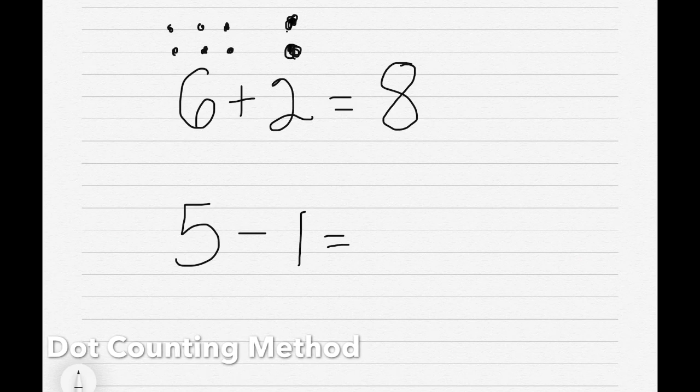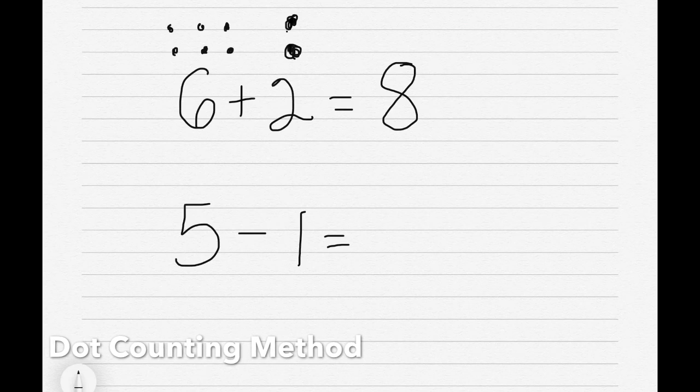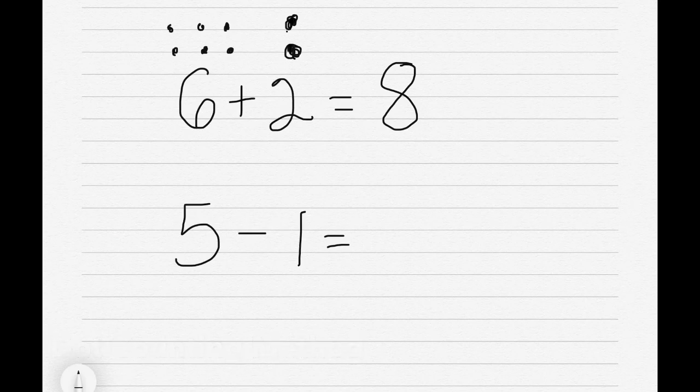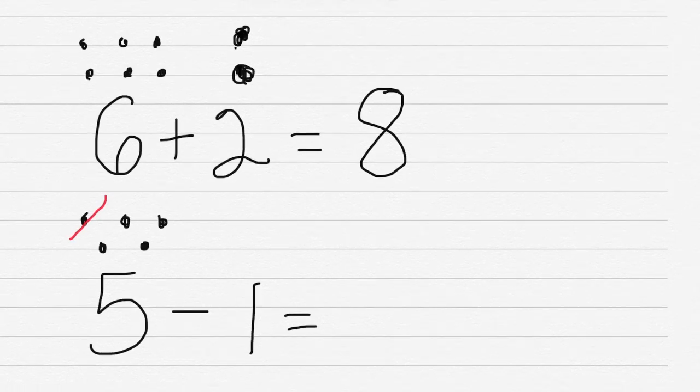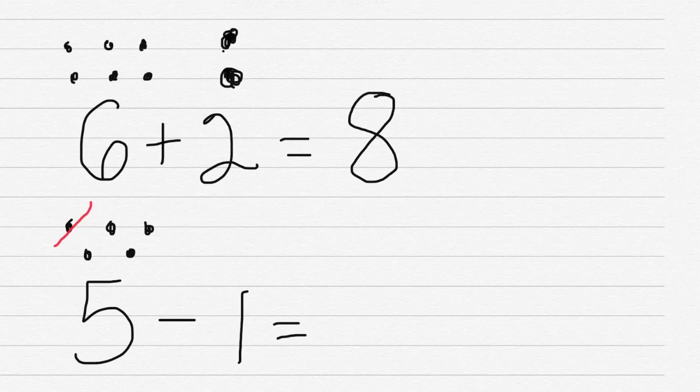For subtraction, we're going to still use count on, but we're going to cross out from the first term. Our first term is 5, so we're going to state 5, but we're subtracting, so we're going to cross out, and our answer would be the leftover dots, which is 1, 2, 3, 4. So our answer would be 4. 5 minus 1 equals 4.